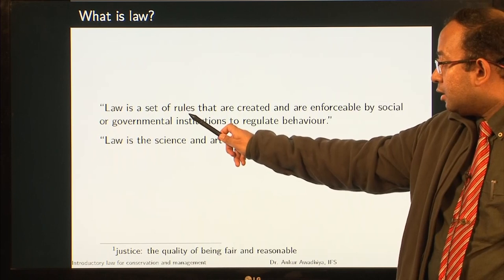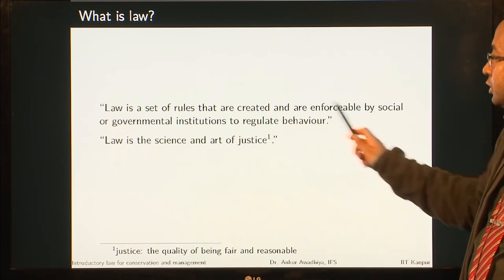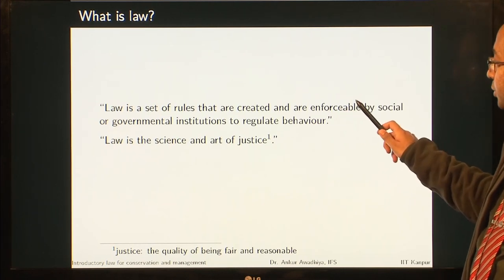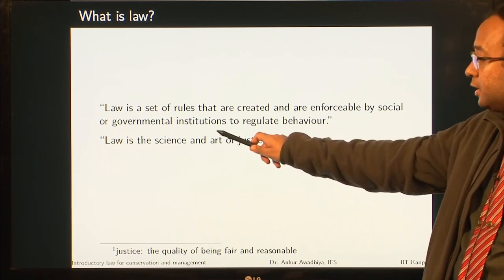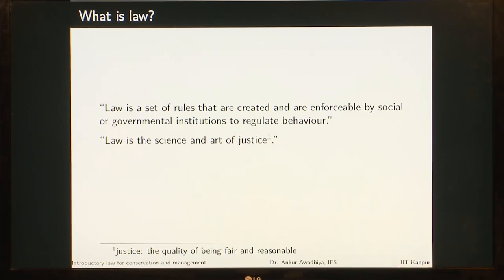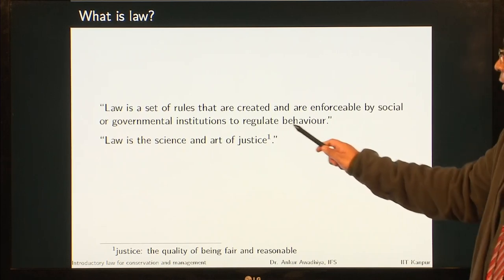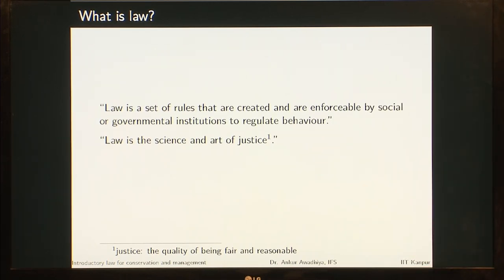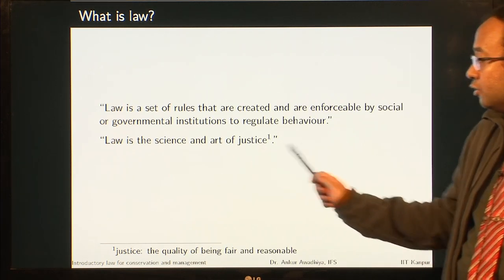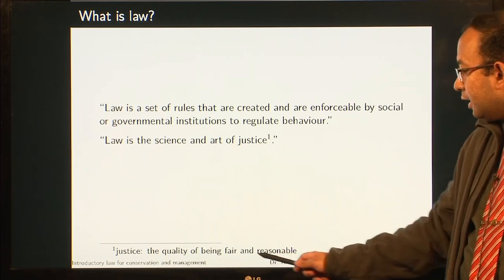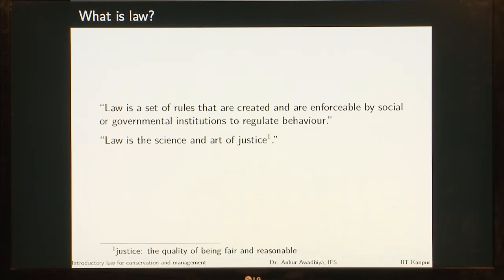Then we looked at law. Law is a set of rules that are created and enforceable by social or government institutions to regulate behavior. They are a set of rules created by social or government institutions and they are being enforced — if people do not follow these laws, they will get certain punishment. This is why we require law, so that we live in a society that is livable. We can also define law as the science and art of justice, where justice is the quality of being fair and reasonable.